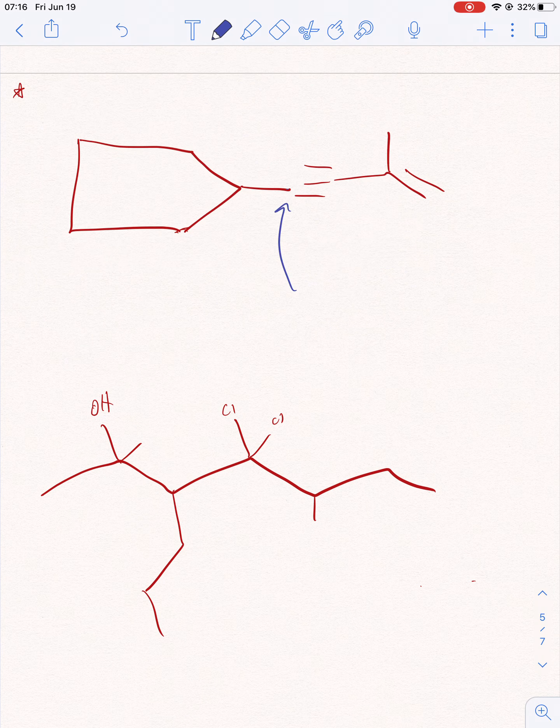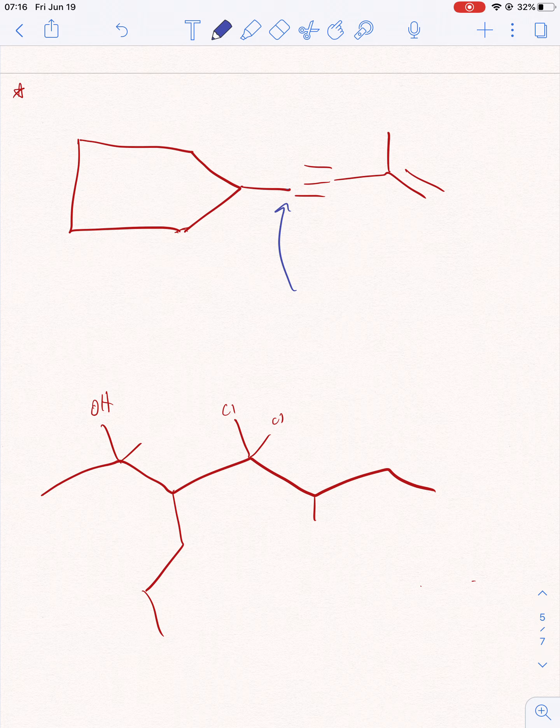So we're gonna start naming here because a triple bond takes priority over everything. So we have methyl, ethyl, propyl, butyl - so it's gonna be butane, butene, whatever - it's four. So we're gonna start counting.